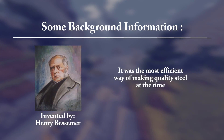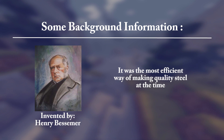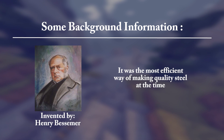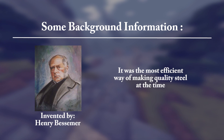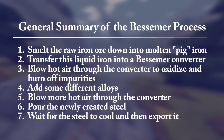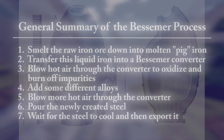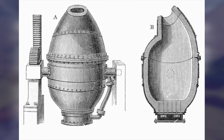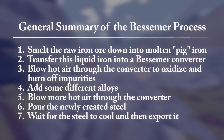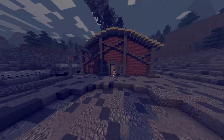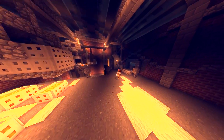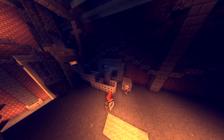Now let me explain the Bessemer process of making steel. It was invented by Henry Bessemer and was the most efficient way of making quality steel at the time. There were seven major steps used to produce steel at the time. Three of these steps involved the Bessemer converter, which is what Henry Bessemer created. The main concept of the converter was to blow air through the molten iron inside in order to remove impurities. Let me explain the entire process from start to finish of producing steel.